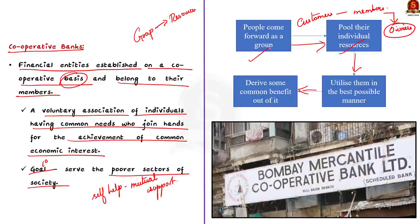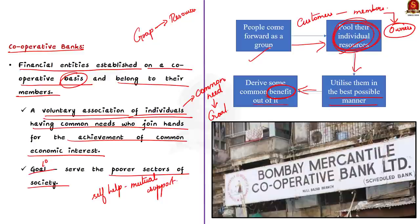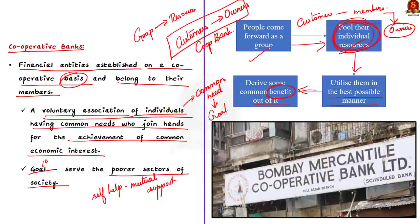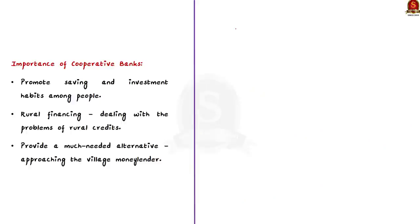A cooperative bank is nothing but a voluntary association of individuals with a common need, coming together for the achievement of common economic interest. The cooperative banking system came into being with the aim to promote saving and investment habits among people, especially in rural parts of the country. The cooperative movement in India was also started primarily for dealing with the problems of rural credits, so cooperative banks play a crucial role in rural financing.